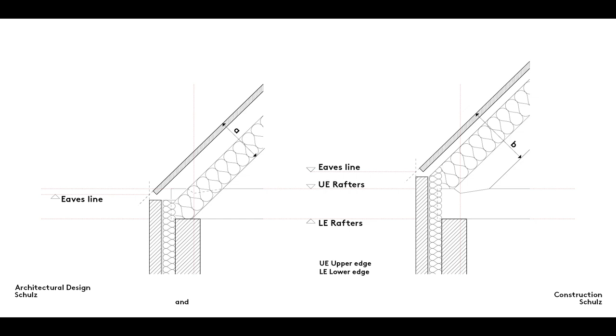The position of the insulation is another factor that influences the height of the eaves. The total height of the roof structure, including insulation, is greater with on-roof insulation than when insulation is placed between the rafters. This means that assuming identically positioned rafters, fitting on-roof insulation pushes the edge of the roof further out, resulting in a higher eaves line.